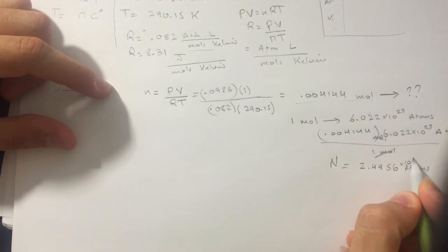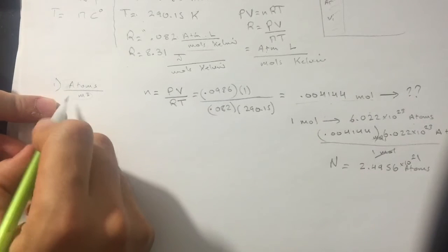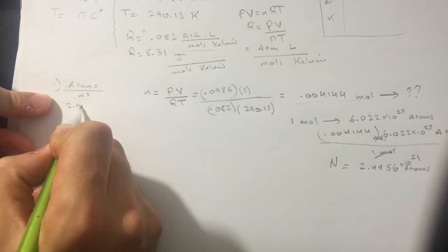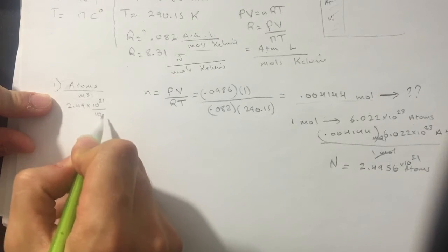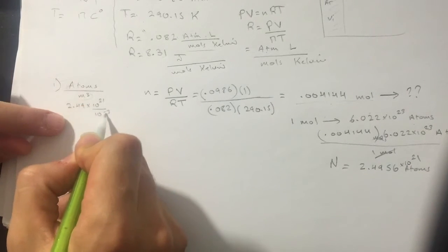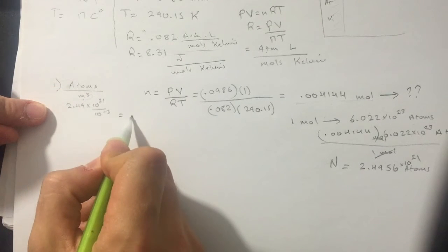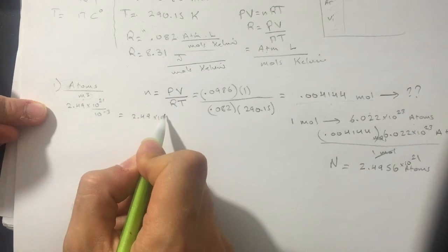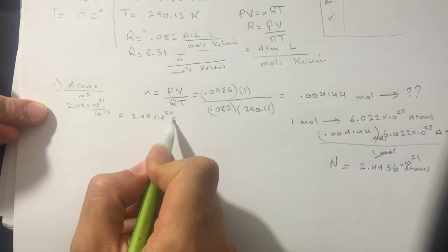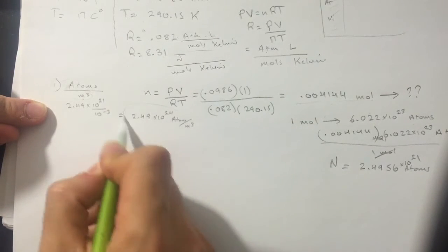Taking that result back, we have 2.49 times 10²¹ atoms divided by the initial volume of 10 to the negative 3 cubic meters. The final answer for number density is 2.49 times 10 to the power 24 atoms per cubic meter.